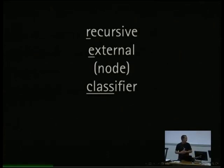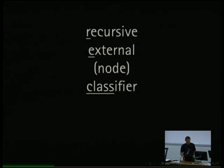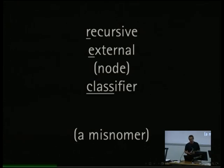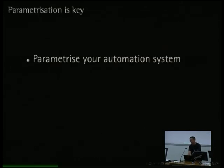Reclass — I've mentioned it a few times without explaining what it means. Originally it stood for Recursive External Node Classifier, where 'external node classifier' is a concept from system automation tools. I call it recursive because I was proud to implement something using recursion. Actually, that's a complete misnomer — you shouldn't name your tools after the implementation but after the user experience. I should have called it 'hierarchical.' Unfortunately that name had been taken, so it stays as Reclass. And Reclass is all about parameterization — you parameterize your automation system, avoid special-casing anything in your code, define your data in exactly one place, and let Reclass merge it.